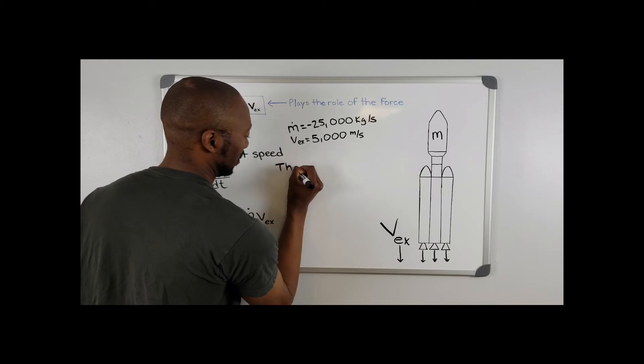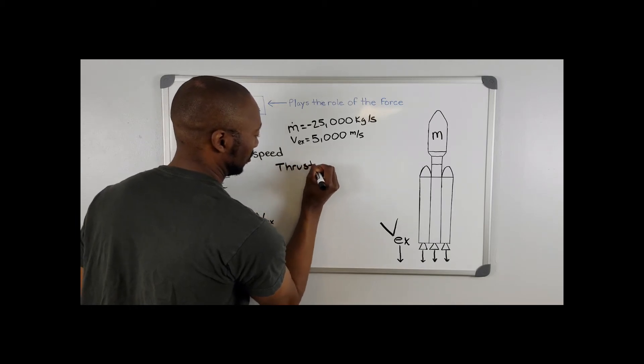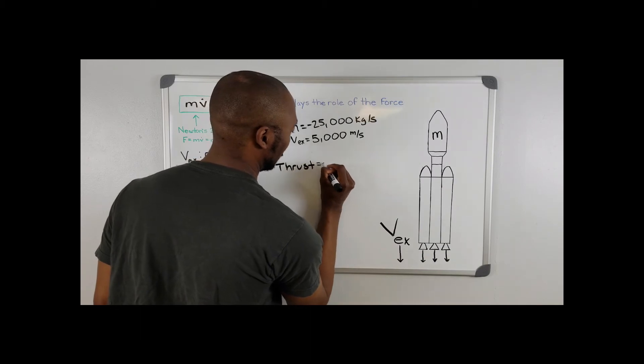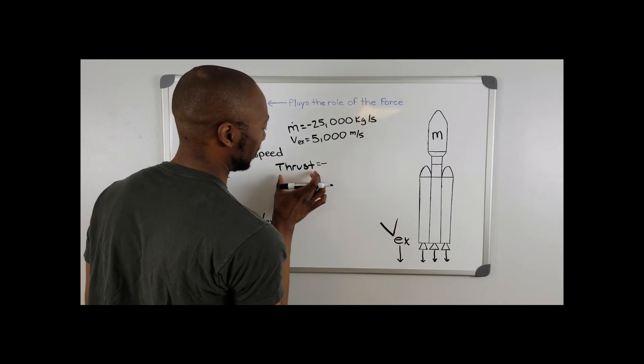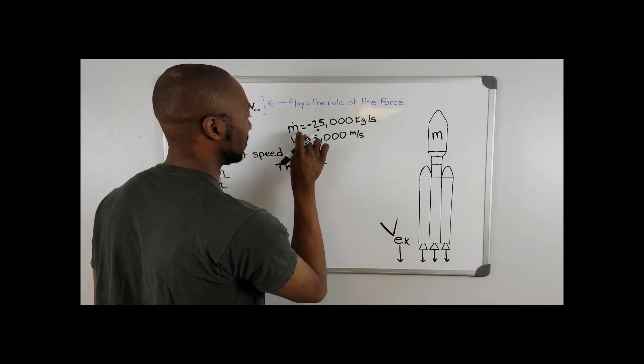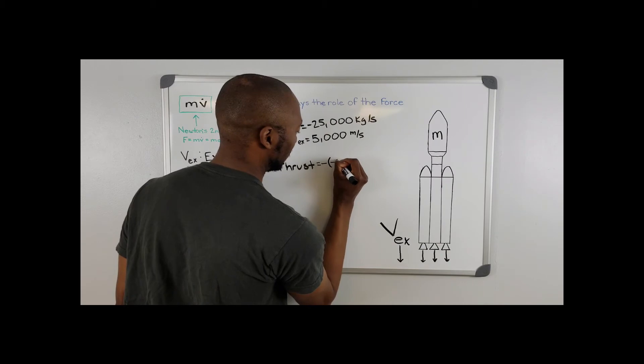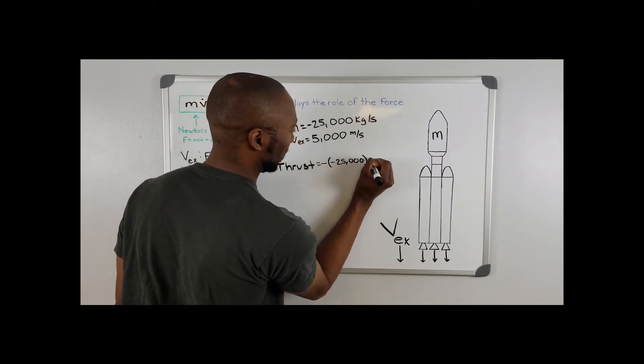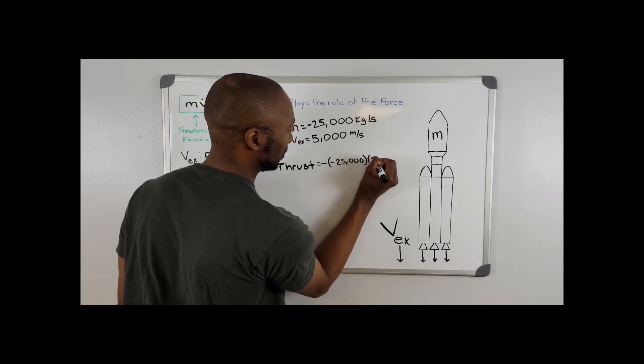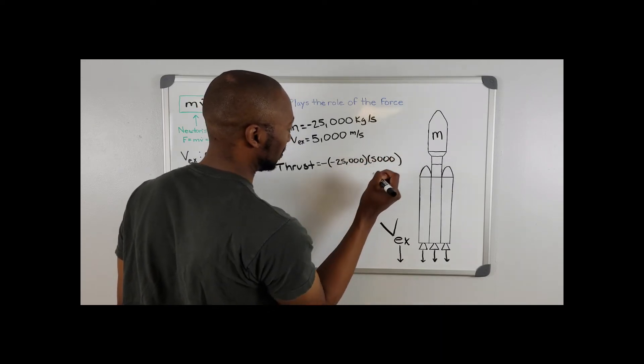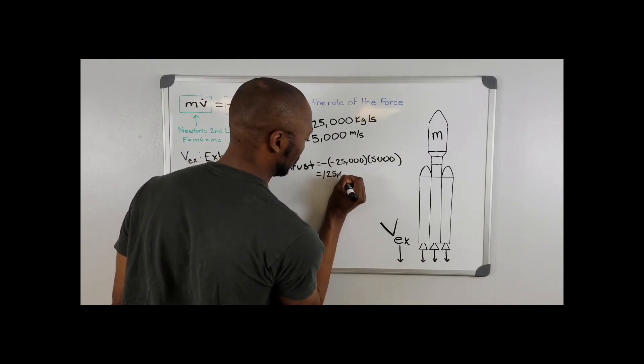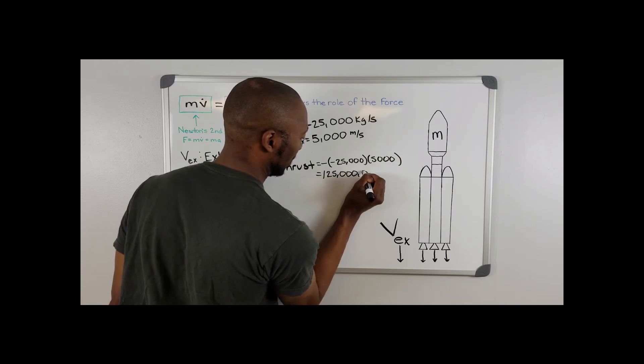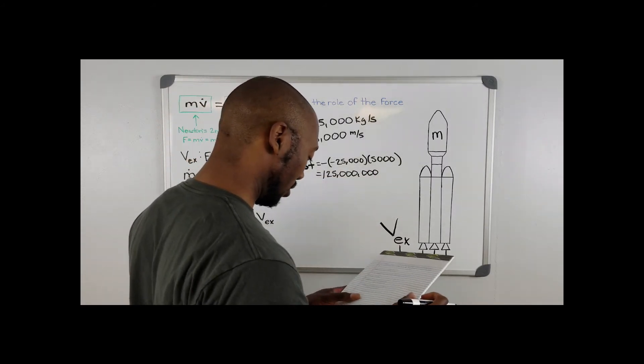We have thrust equals negative. And remember, we said that because thrust is going to have a positive quantity, that this also must be negative as well. So negative 25,000 times 5,000 meters per second, and our thrust is going to be 125 million newtons.